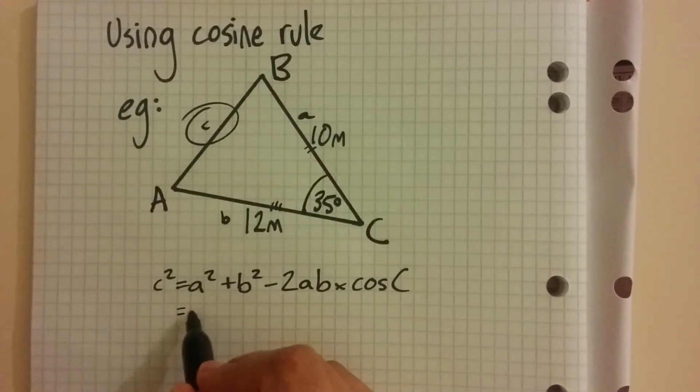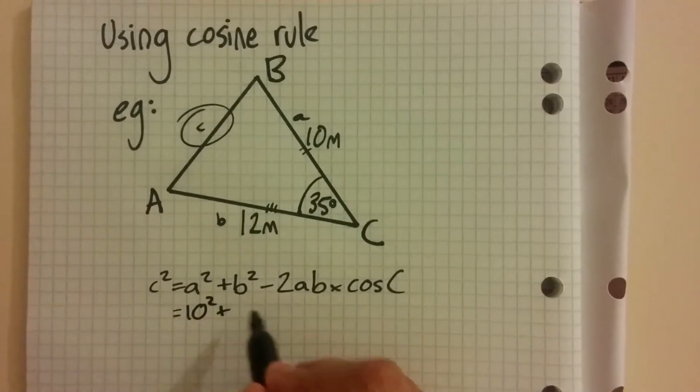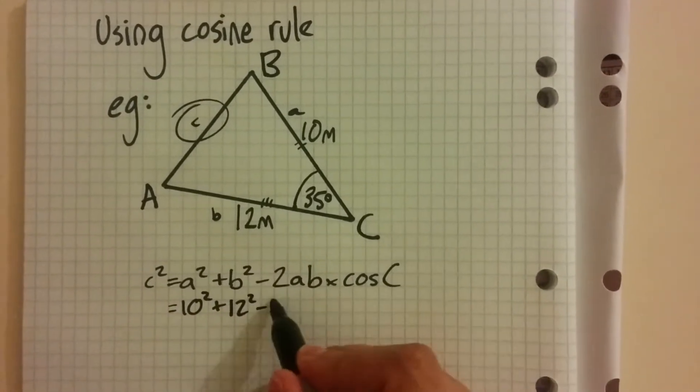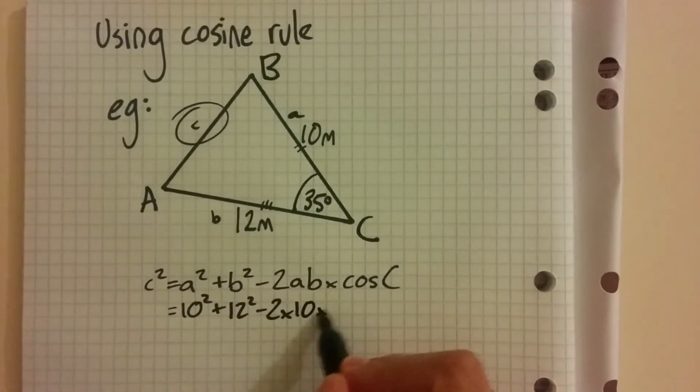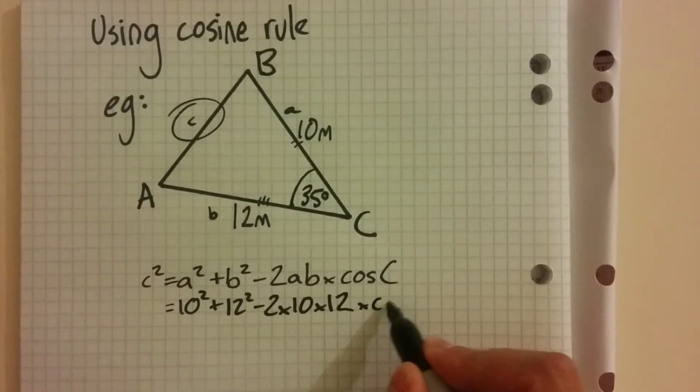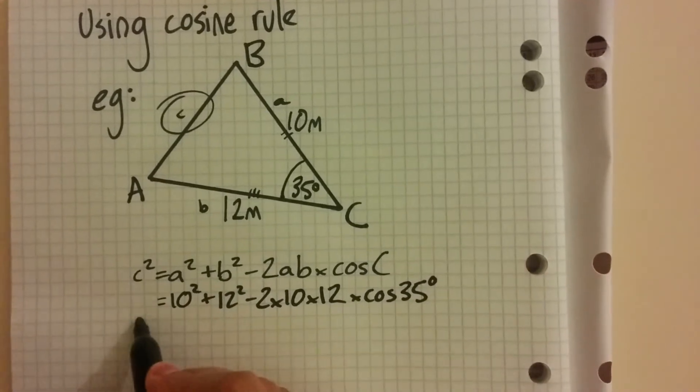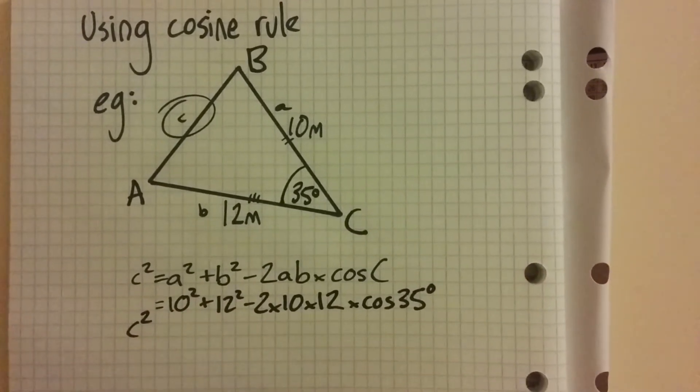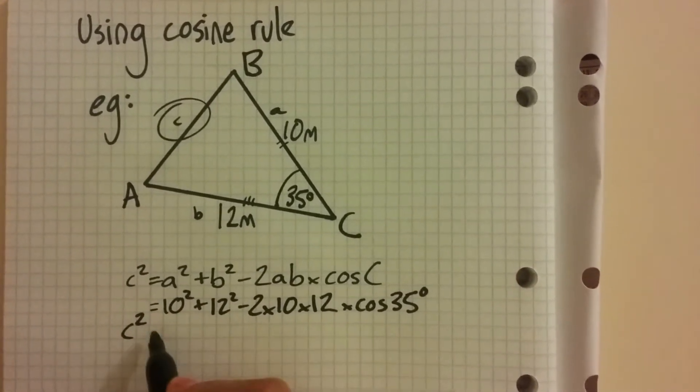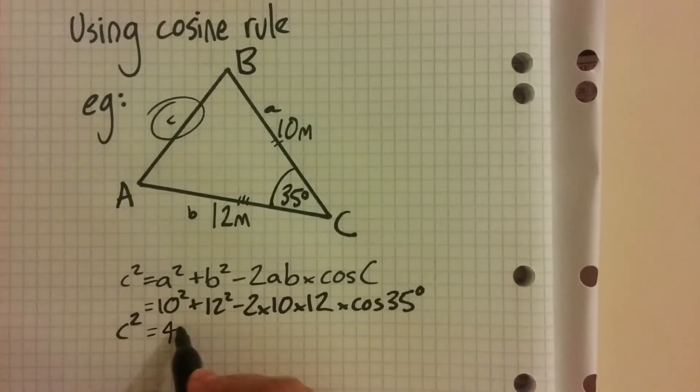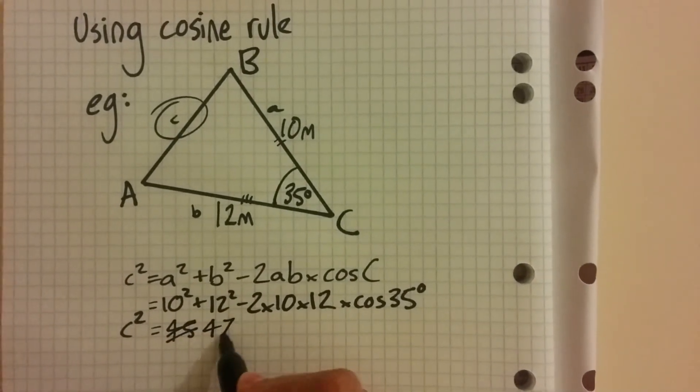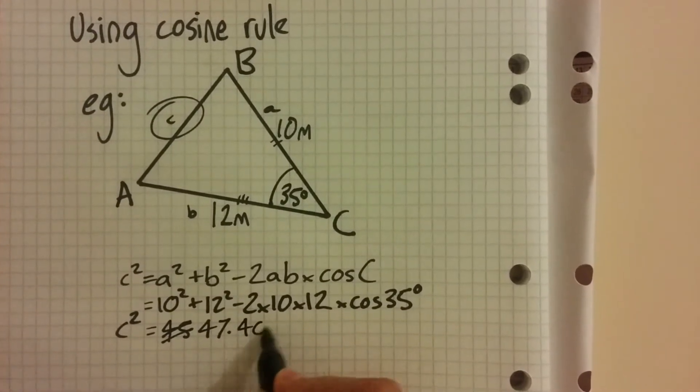c squared equals 10 squared plus 12 squared minus 2 times 10 times 12 times cos of 35 degrees. That gives us c squared equals 47.4035.